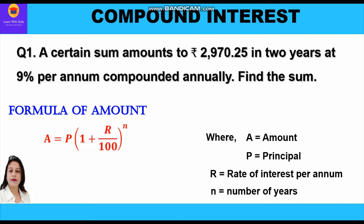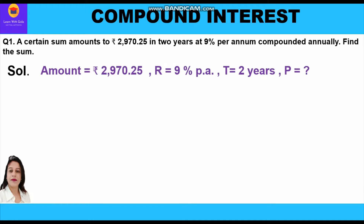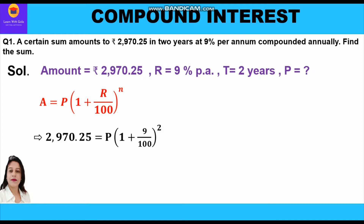Where A is the amount, P is the principal, R is the rate of interest per annum, and N is the number of years. Amount is given as rupees 2970.25, rate of interest is nine percent per annum, time period is two years, and we have to find the principal. We apply the formula: A equals P into bracket one plus R upon hundred, whole raised to power N. Putting values: 2970.25 equals P into bracket one plus nine upon hundred, whole squared.